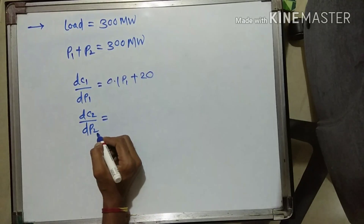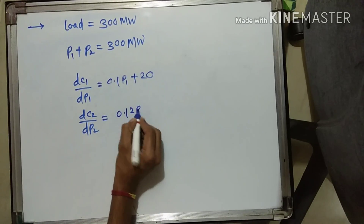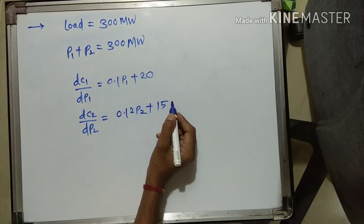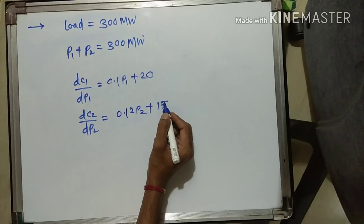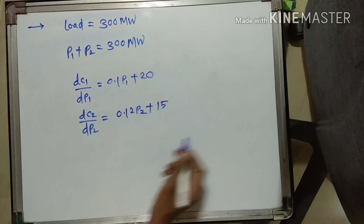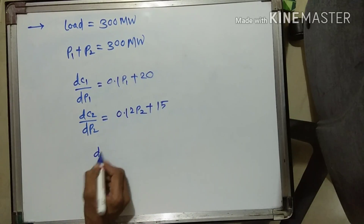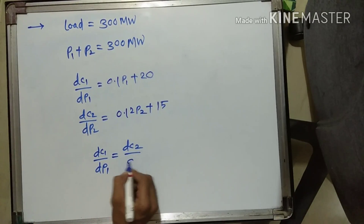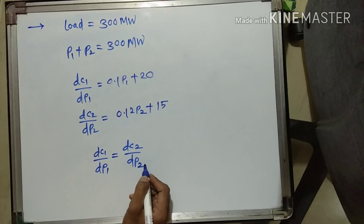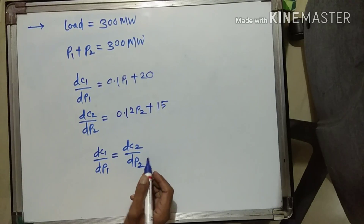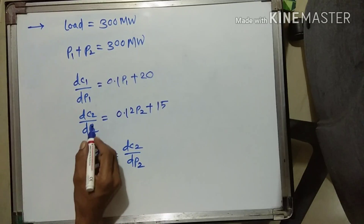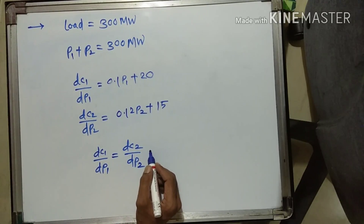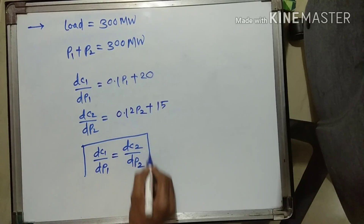To find the most economical load division, we need the condition for optimum operation. When transmission losses are not given, the condition for optimum operation is: DC1/DP1 = DC2/DP2. Now put the values of DC1/DP1 and DC2/DP2 into this condition for optimum operation.